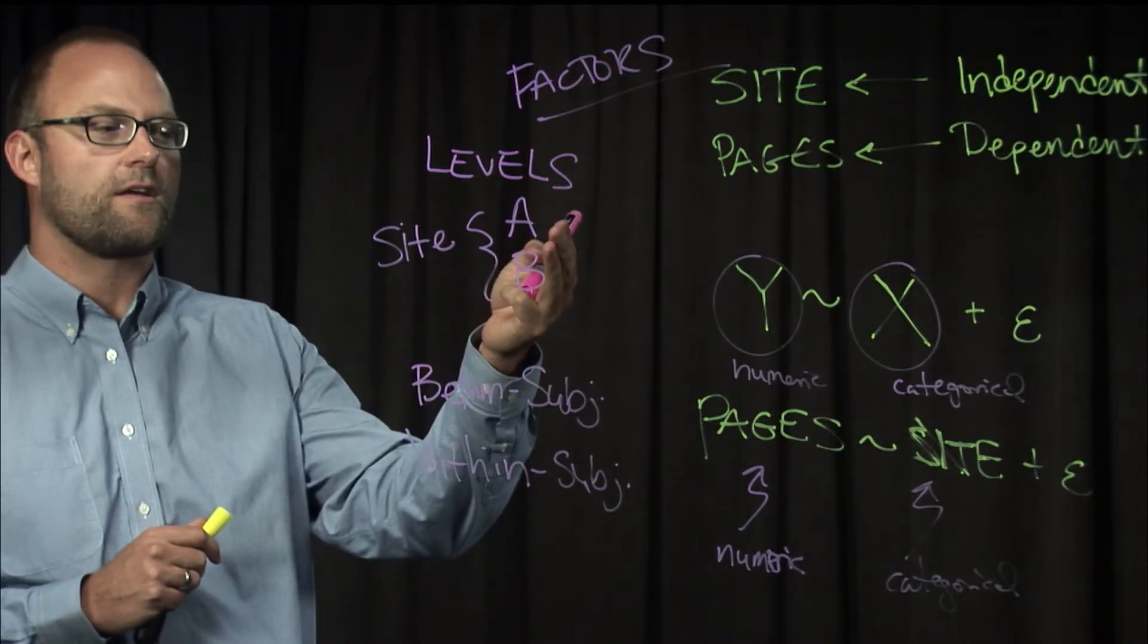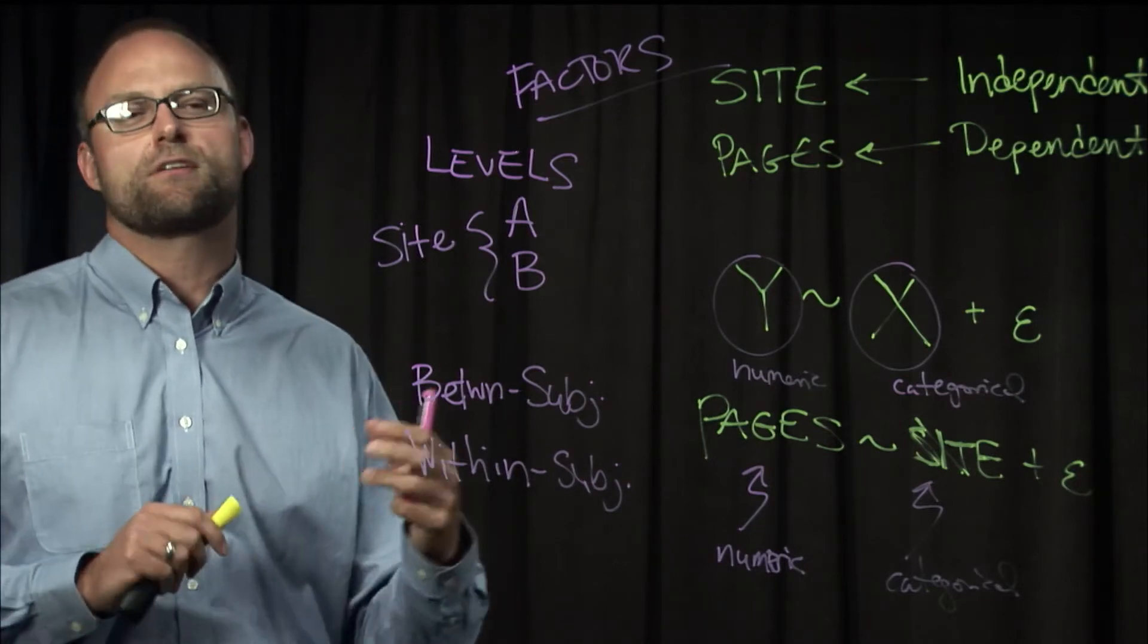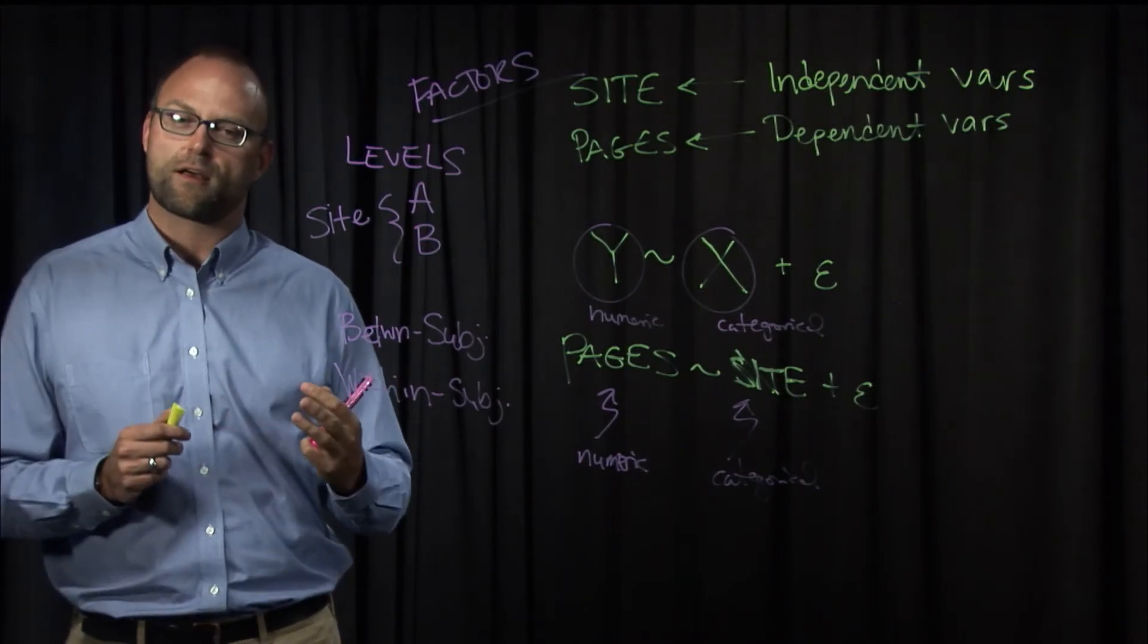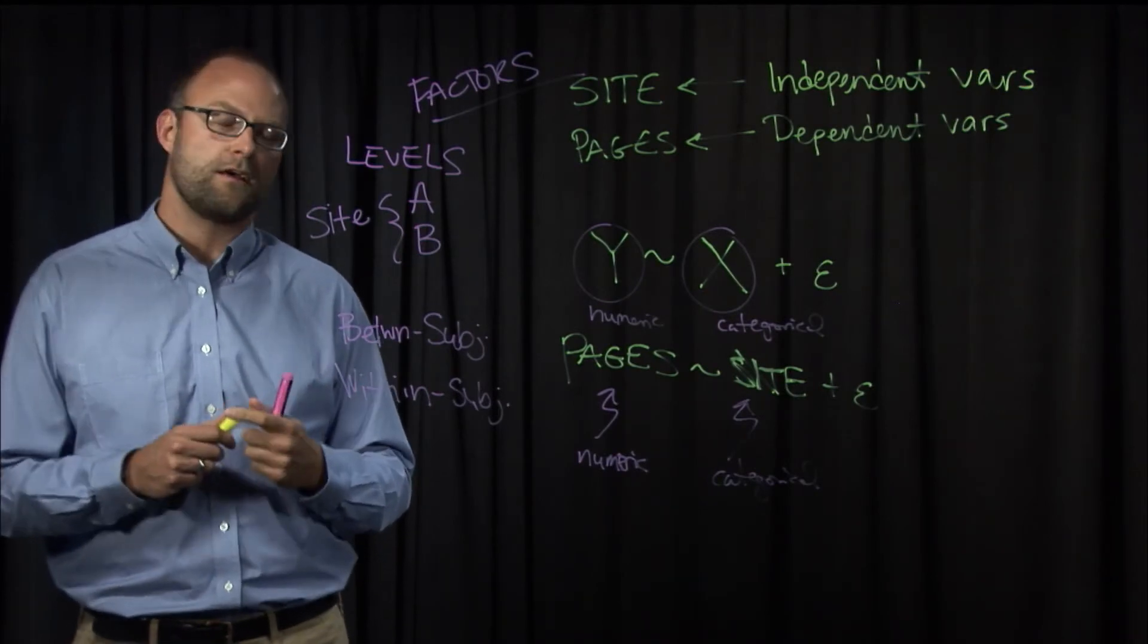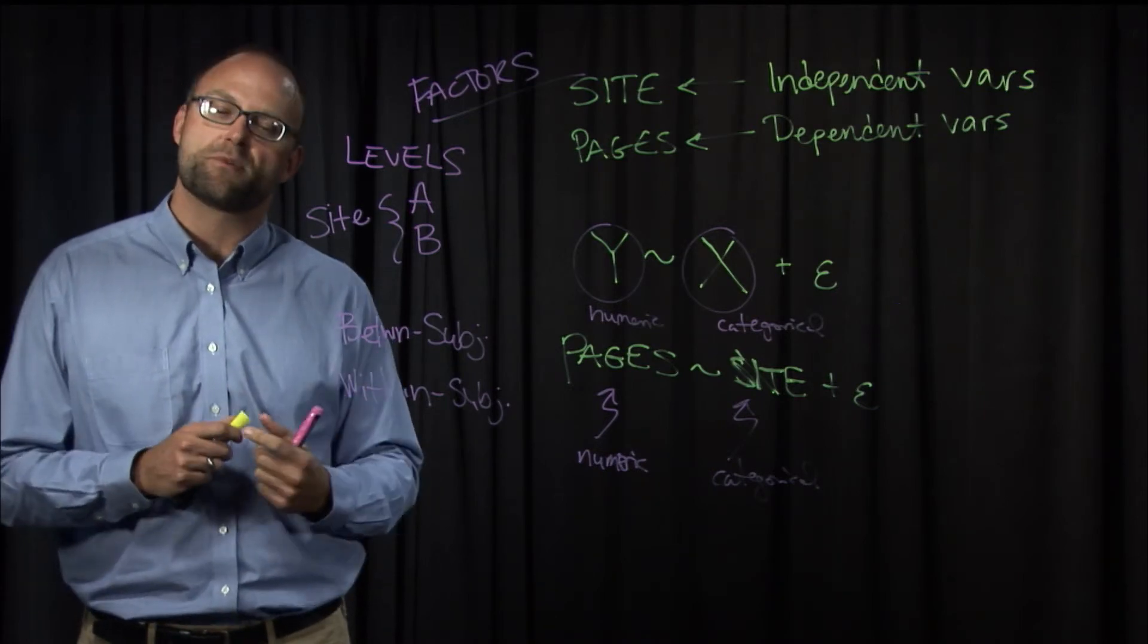Within subjects factor is one for which a participant experiences more than one level of the factor. In this case, it would be both website A and B. In a website A-B test, when a visitor comes to a site, they're usually issued into one or the other variations of the website, and not both.